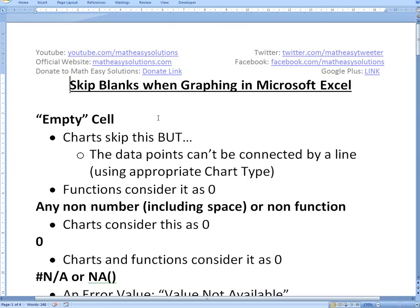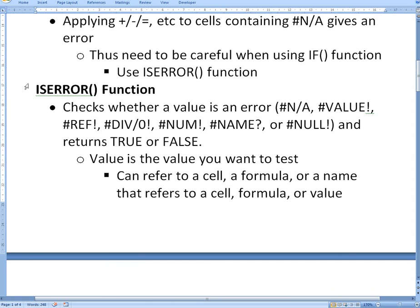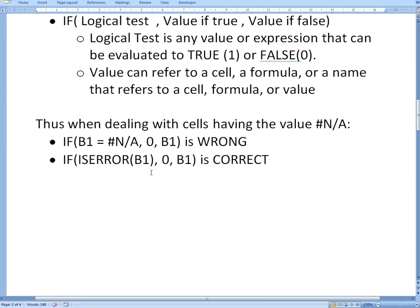Also I've made a Word document with some notes on this: empty cell, what it is, any non-number, what charts consider the functions, hashtag N slash A. Also I just made this note, ISERROR function, IF function, and you can download this in the Dropbox link below as well as that Excel file. I also have this way of writing the IF statement using the error function. It's wrong if you use the equals, you have to use the ISERROR.